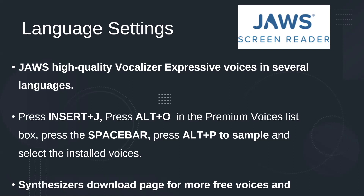In the Select a Language combo box, you can select the language you want to download voices for. In the Premium Voices list box, press the spacebar on the voices you want to install. If you'd like to test one out beforehand to see if you like it, press Alt+P, then select the Install Selected Voices button to begin installation.